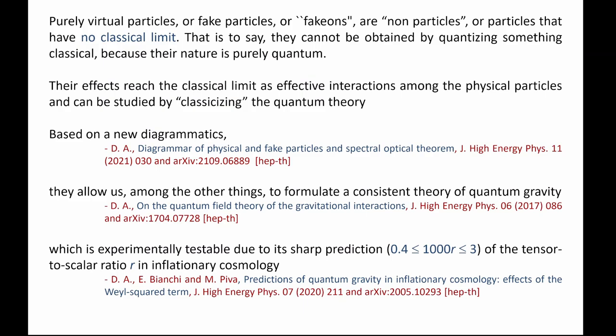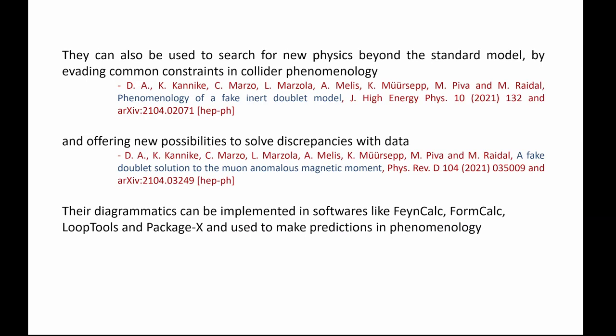It's also testable because if you apply that theory to primordial cosmology, you get a sharp prediction for the tensor-to-scalar ratio in inflationary cosmology. This number hopefully will be measured soon, so let's see if it falls precisely in that window. There are many phenomenological applications; it can be used to search for new physics beyond the standard model. The diagrammatics we will see is very simple — the bubble, the triangle, the box — and it can be implemented in software.